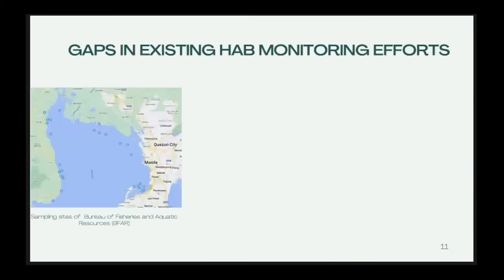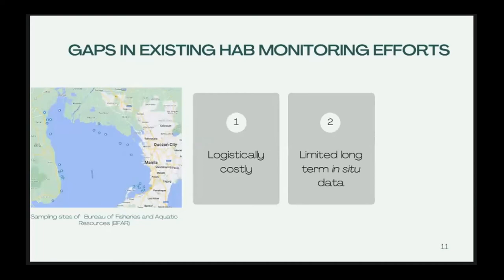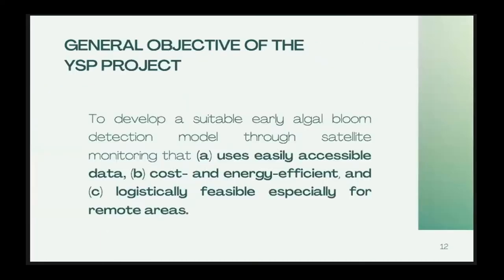There are existing HAB monitoring efforts in our country, mainly through the adoption of predictive models heavily reliant on sensors deployed on-site and regular field sampling by the Bureau of Fisheries and Aquatic Resources. However, there are several challenges: deploying sensors in actual field sampling is logistically costly; there is limited long-term in-situ data collected for developing predictive models; and the shellfish meat monitoring method has limitations such as possible delayed reporting relative to actual HAB events. These gaps underscore the need to develop an early algal bloom detection model through satellite monitoring — an accessible, cost-efficient, and logistically feasible tool, especially for remote areas.